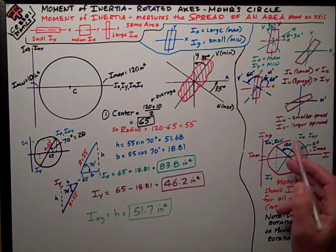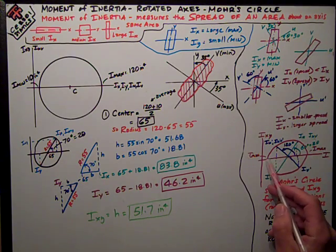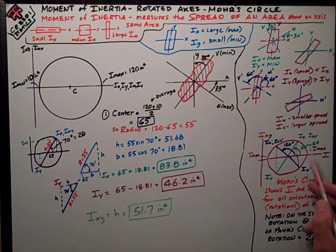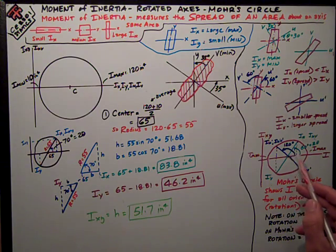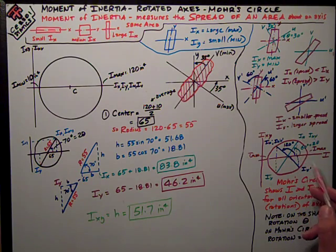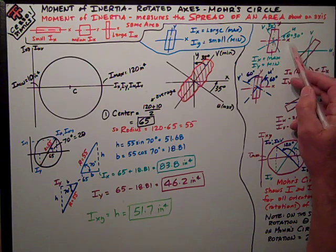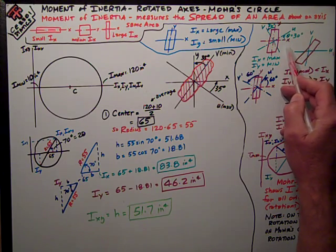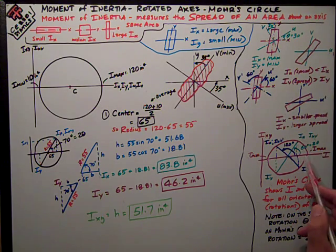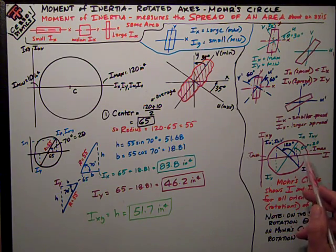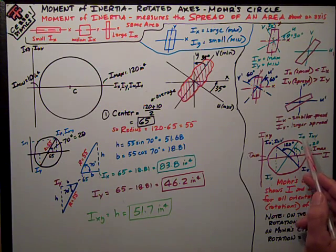In this case, the first orientation was the maximum and the minimum moments of inertia. Just plot that as a coordinate. Whatever that number is, just plot it there. Then I find the center as the average, and we'll do that in a second. And then I draw a circle, figure out what the radius is, and then I can go to any point on that circle. And if I'm rotating 30 degrees, as I was in this first example, on the real shape, I'm rotating 60 degrees on Mohr's circle. So I can do the geometry using triangles and figure out what the plot of that is, iu.